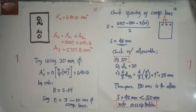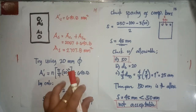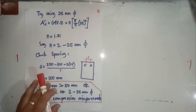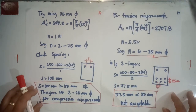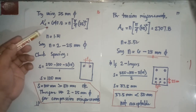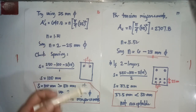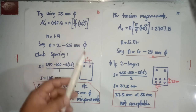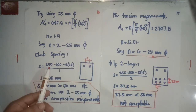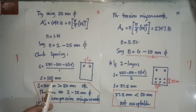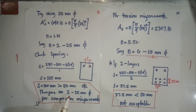Try 25mm diameter bars for compression steel: N = 640.8 / (π/4 × 25²) = 1.31, use N = 2 bars. Check clear spacing: S = (250 - 100 - 25) / 1 = 100 mm. Since 100 mm > 50 mm minimum, this is acceptable. Use 25mm diameter for compression reinforcement.